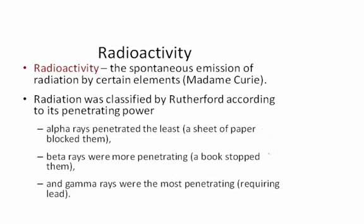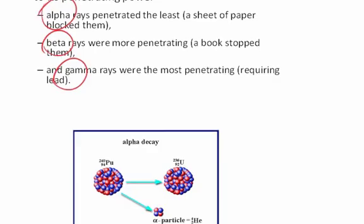Beta particles were more penetrating. You need to put a book between the source and the detector, and gamma rays were the most penetrating. The gamma rays would go through the book and the paper, and it required lead, a sheet of lead, to stop the gamma rays. That's how we ended up with the terms alpha, beta, and gamma. So what exactly are they?